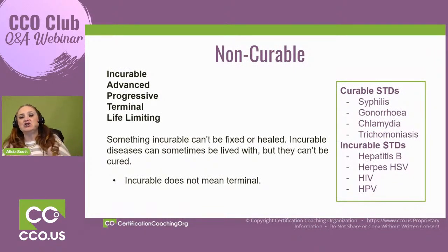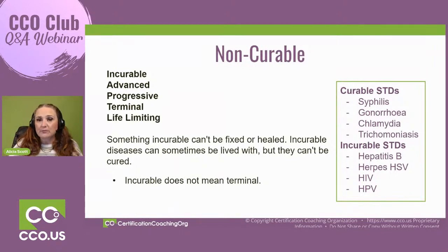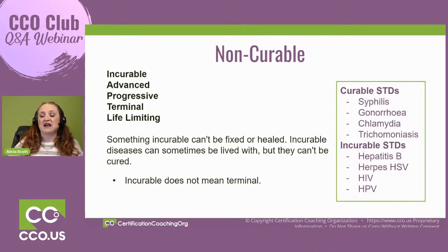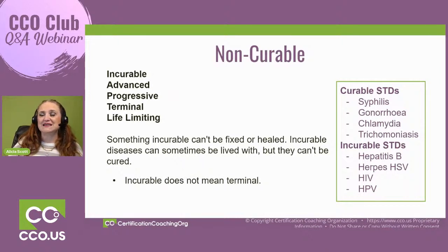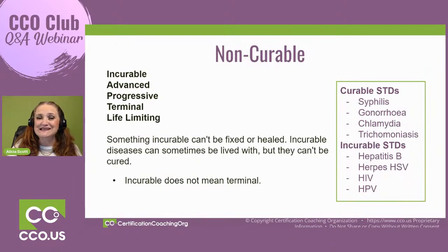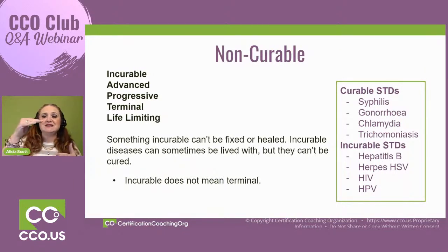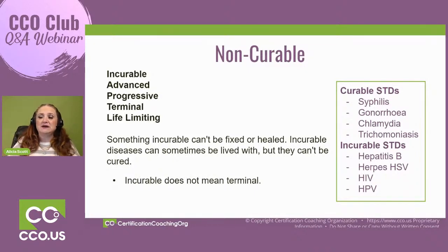Now let's move to non-curable, which would be classified as incurable. We have verbiage that could be used to substitute incurable: sometimes you will hear 'advanced stage of the disease,' 'progressive disease,' 'terminal,' and 'life-limiting.' All could be synonymous with incurable. The best way is to think about something most people are familiar with regarding the disease process. I picked STDs, because within that category there are both curable and incurable types.